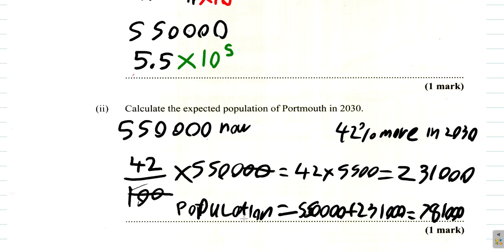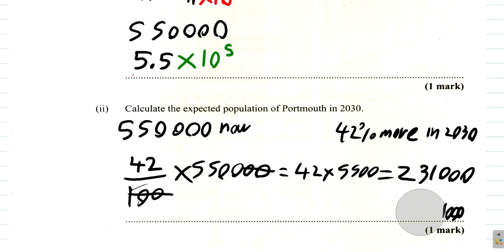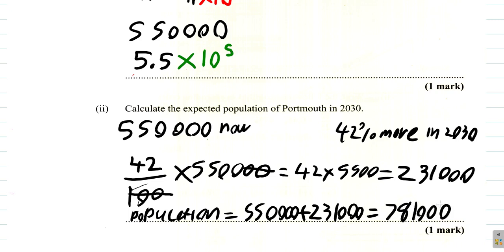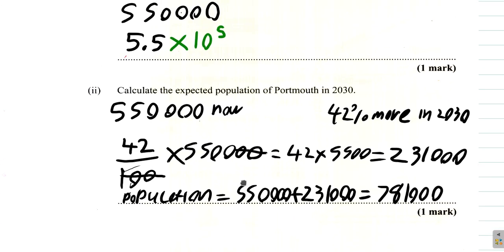So that is the expected population of Portsmouth in 2030, which is our answer: 781,000. We'll continue in our next video.